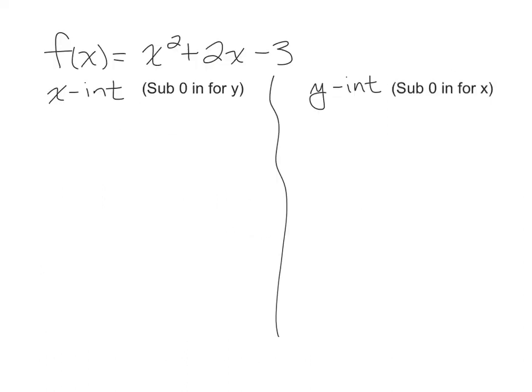On this second slide, we will be finding the x-intercepts and the y-intercepts for the function f of x equals x squared plus 2x minus 3. To find the x-intercept, you will substitute 0 in for y. And if you'll remember, f of x is the same thing as y. So that entire expression, f of x, will become 0.